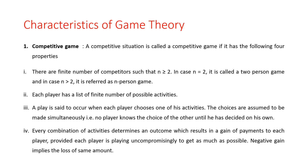The last property is every combination of activities determines an outcome which results in the gain of payments to each player, provided that each player is playing uncompromisingly to get as much as possible. Negative gain implies the loss of the same amount. These are the different properties in the competitive game.